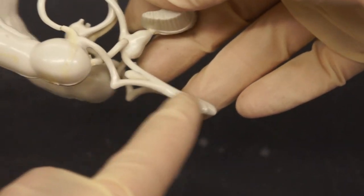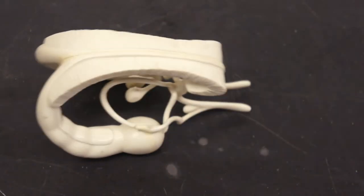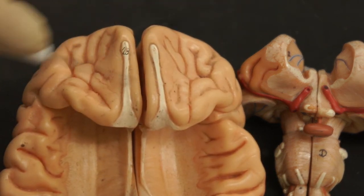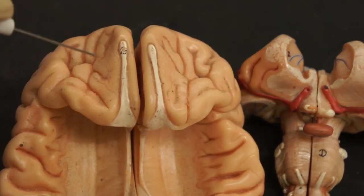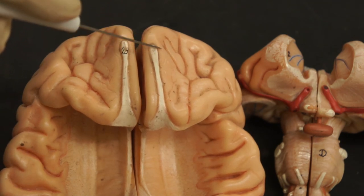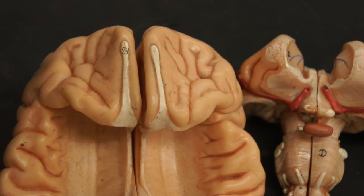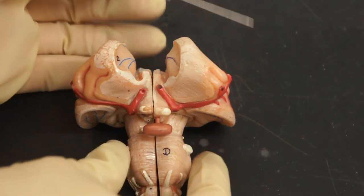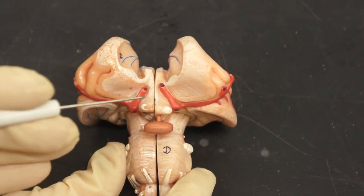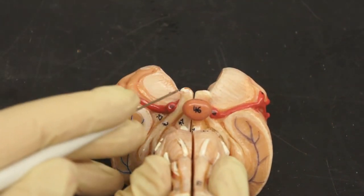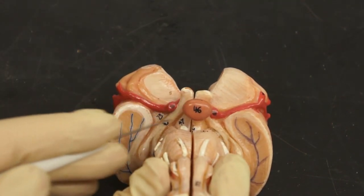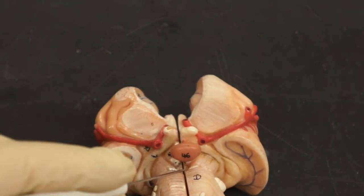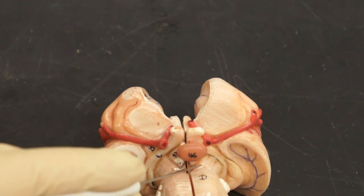And here we have the olfactory tract and bulb. Here we're going to be going over the cranial nerves. First we have the olfactory tracts and the olfactory bulbs, from which olfactory nerve one comes through. And then here we have the brainstem. And we have optic nerve two coming out from here, coming out this direction from the optic chiasm, optic tract back here, optic nerve two. And then we have here, the oculomotor nerve three.